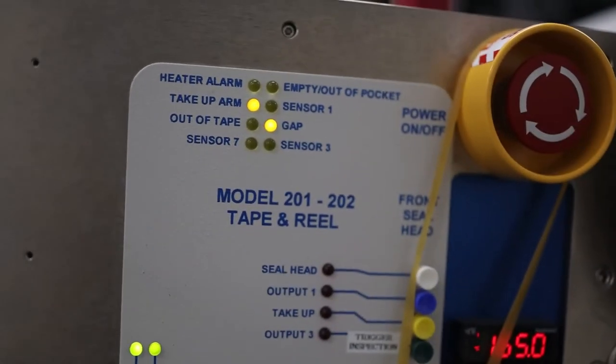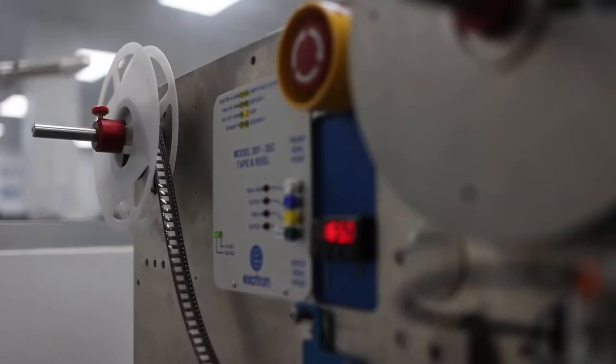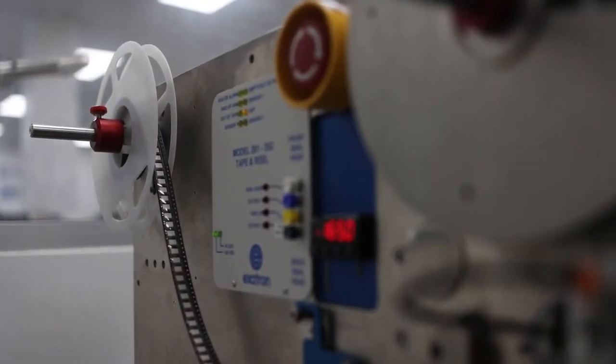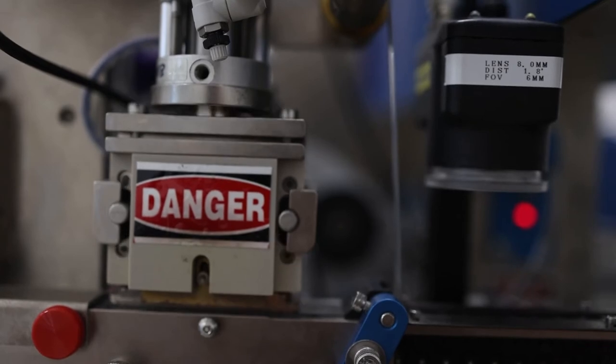Epson programmable blanks are shipped on tape and reel. Each reel is fed through the handler's detaper, which removes the top tape and exposes the devices for pickup head access.